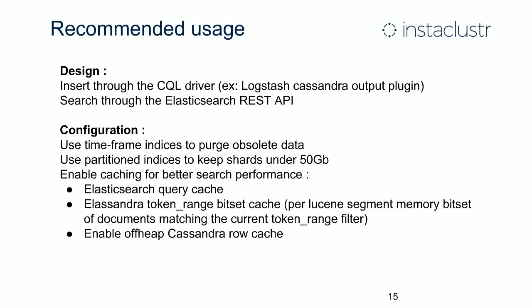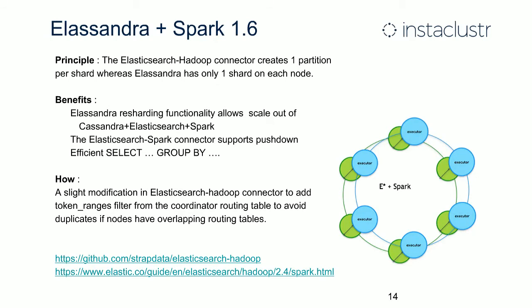You can also use Elassandra with Spark. There is an Elasticsearch-Hadoop connector that creates a way to query Elasticsearch through Spark jobs. This connector supports predicate pushdown, meaning that when possible, your Spark DataFrame query is converted to an Elasticsearch query — for example, a SELECT with a GROUP BY is converted to an Elasticsearch aggregation query. This can drastically reduce query times from minutes to seconds in your Spark jobs.